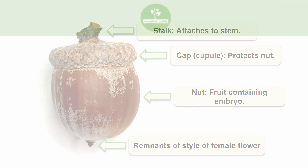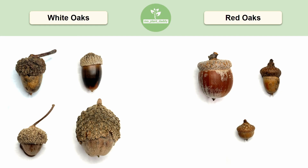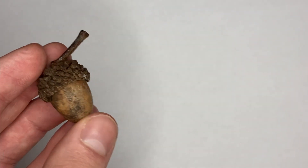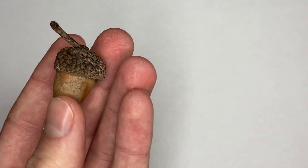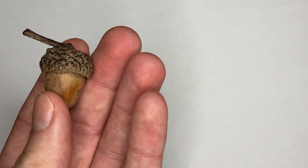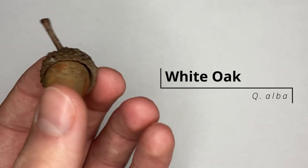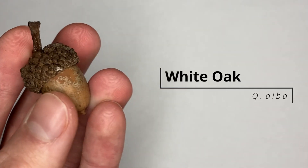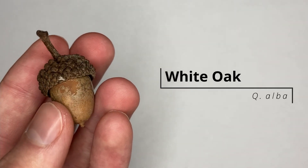Alright, we can go ahead and start with our acorn identification, beginning with our white oak group. Here's our first acorn, which is the namesake of the group — the white oak, otherwise known as Quercus alba.